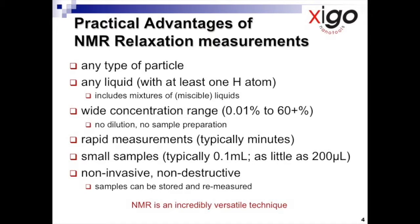Second, you can work with any liquid as long as it contains at least one hydrogen atom. For example, we can make measurements in hexane but not carbon tetrachloride. Even mixes of miscible liquids such as ethanol-toluene can be used. This is a very useful benefit, particularly when working in non-aqueous media and when investigating the wettability of surfaces.